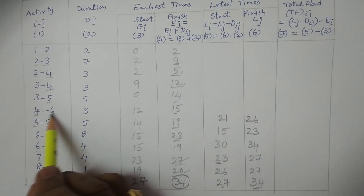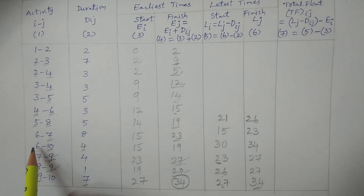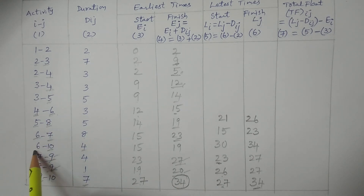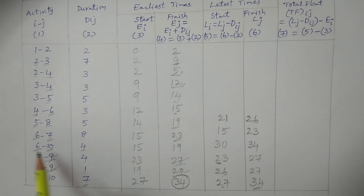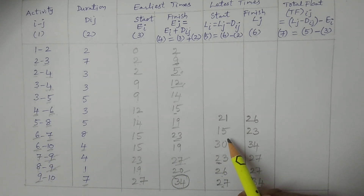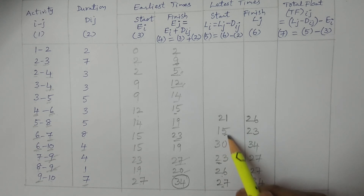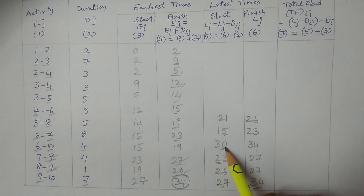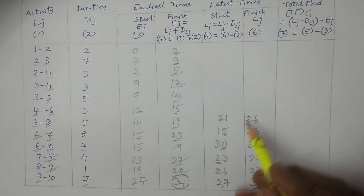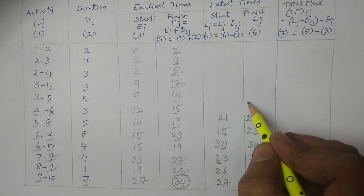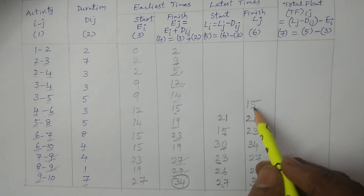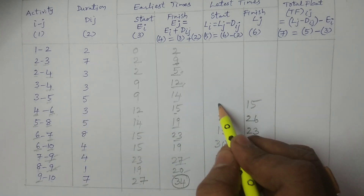For 4 to 6: L6 is required, but we have two 6's — from 6 to 7 giving 15, and 6 to 10 giving 30. For latest times, take the minimum: minimum of 15 and 30 is 15. 15 minus 3 equals 12.